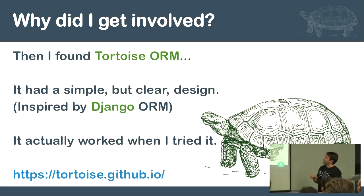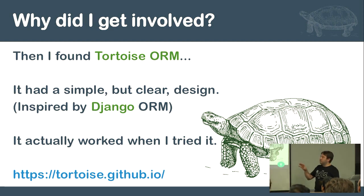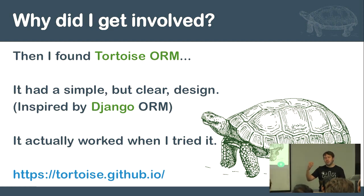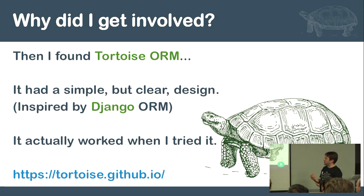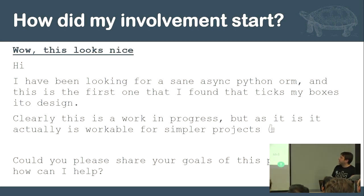Then I found Tortoise ORM with a lovely little mascot. It was a simple design. It actually worked when I tried it. And whoever was doing it — Andre Bondaro, who started it — wanted a Django-like interface. We were using the Django-style models to define objects. And this is how I got involved. I really feel that you should all do this — go up to a project and start an issue titled 'Wow, this is nice.'